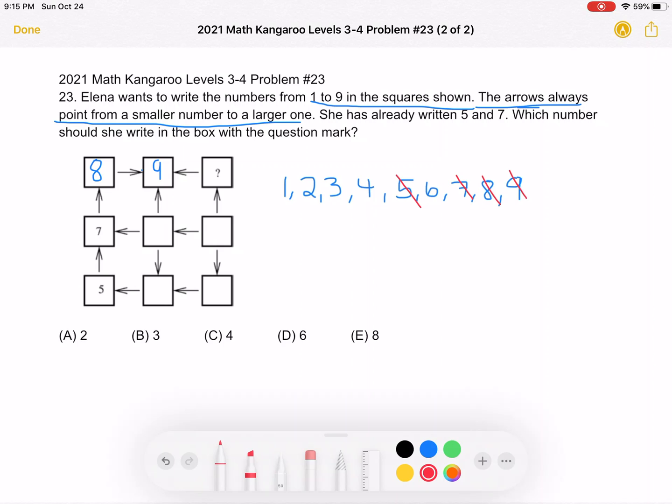Let's think about placing 1, the smallest number on our list. Well, because it's the smallest number, we know that it cannot have any arrows pointing toward it, only arrows pointing away from it. And as we can see, this is the only box for which that is true. So 1 must be there.